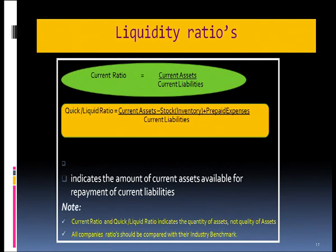Now let us talk about the second liquidity ratio, the quick ratio, also called the liquid ratio. The liquid ratio has the numerator changed: it is current assets minus inventories minus prepaid expenses, divided by current liabilities. This defines liquidity more directly than the current ratio. Most firms calculate the quick ratio after current ratio because it gives a better picture of liquidity, having deducted inventories and prepaid expenses — the slow-moving current assets.